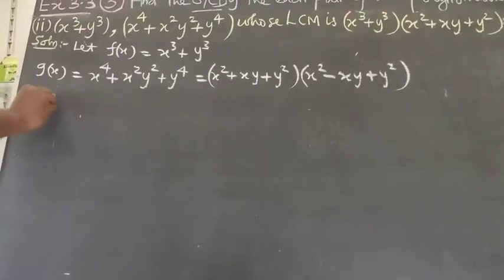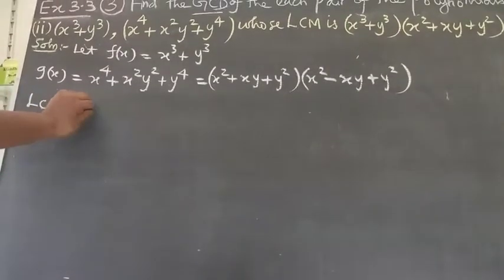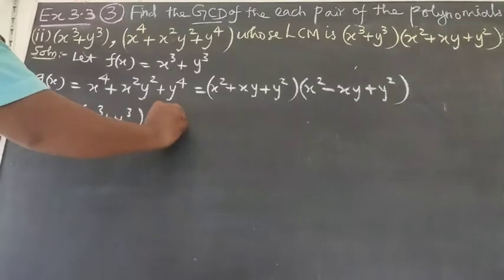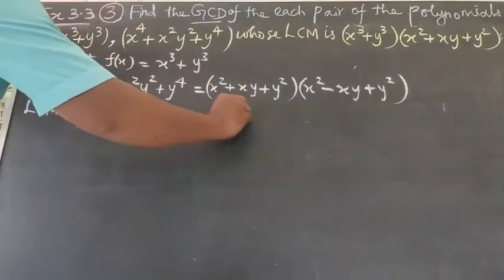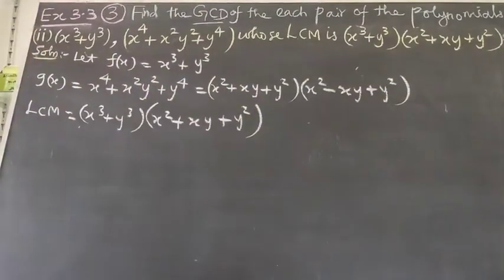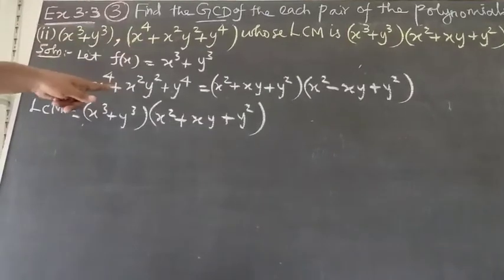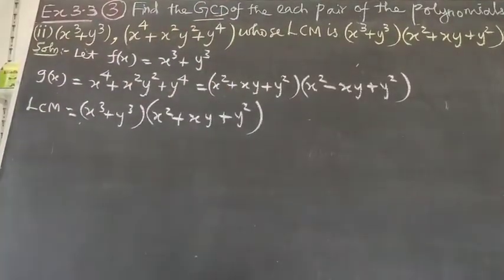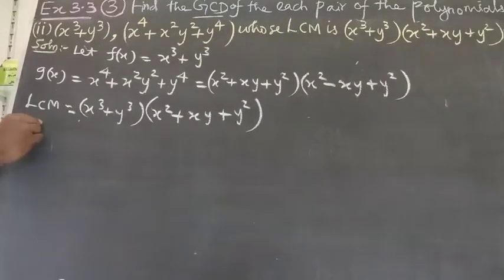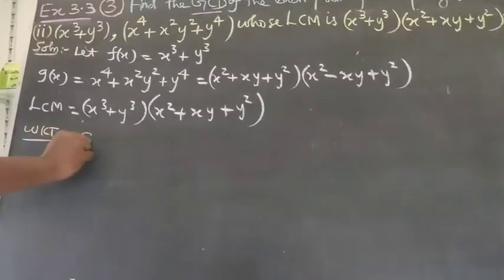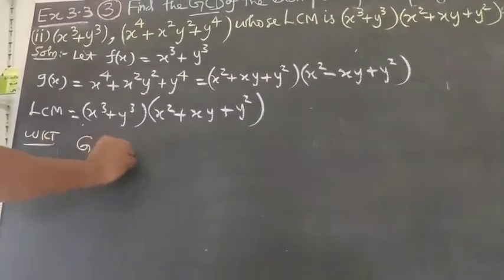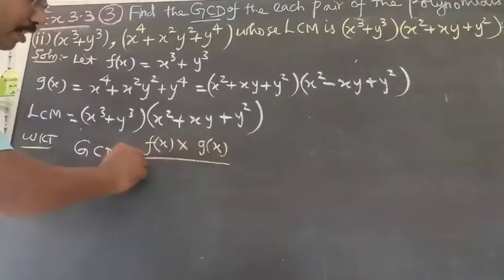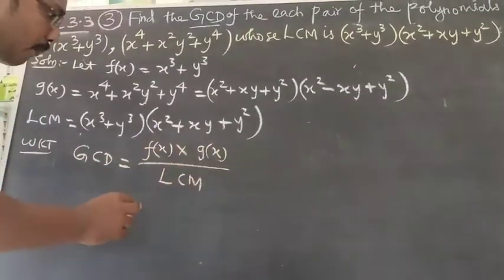LCM is given as X cube plus Y cube times X square plus XY plus Y squared. We know that GCD is equal to F of X times G of X divided by LCM. That is the formula.